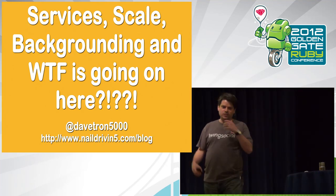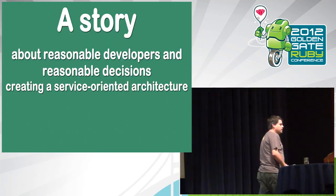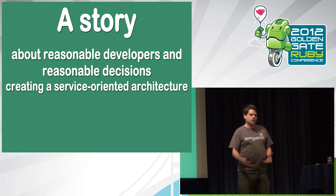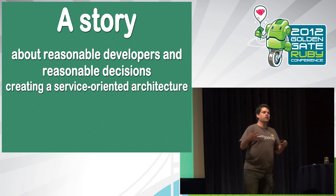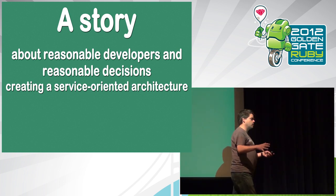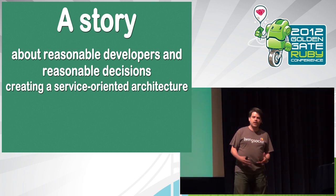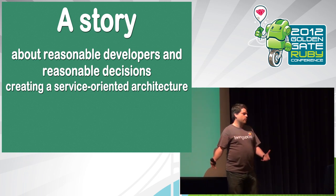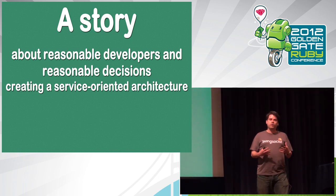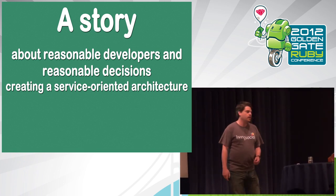So here's the title of my talk: Services, Scale, Backgrounding, and What is Going On. This is really going to be a story about reasonable developers making reasonable decisions, doing reasonable things as they move away from a monolithic Rails app and allow their architecture to scale, be more managed, handle more things, handle a larger team. And despite everyone in this story making reasonable decisions, things will go wrong and strange things will happen, and we'll talk about how to deal with that.